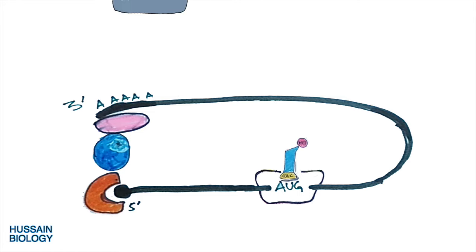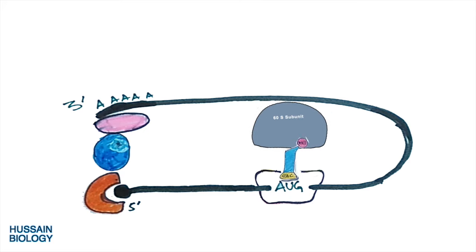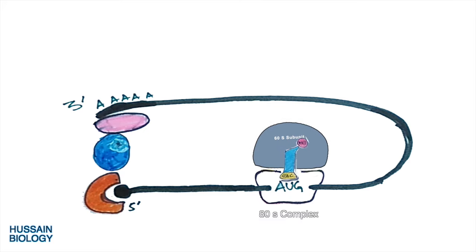After all the factors leave, the 60S subunit of the ribosome is recruited to the site, and we get the formation of the 80S complex as shown in the diagram. This is how eukaryotic translation initiation takes place through the cap-dependent initiation pathway.